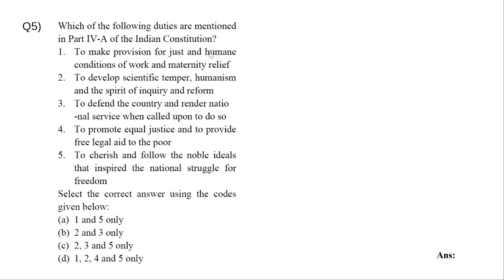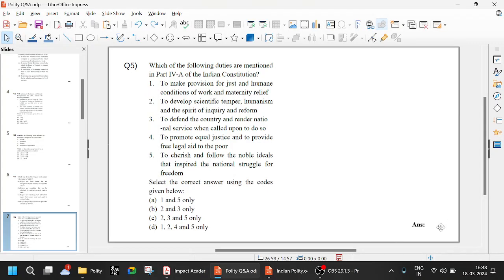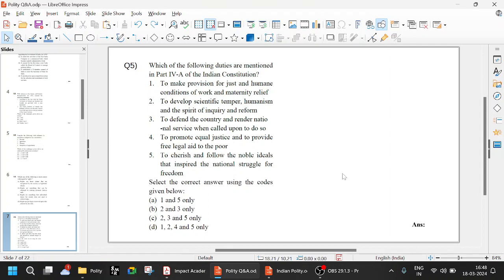Which of the following are mentioned in Part 4A? Statement 1 — 'to make provisions for just and humane conditions for work and maternity relief' — this is Article 42, part of DPSP, not a fundamental duty. Statement 2 — 'to develop scientific temper, spirit of inquiry, and reform' — yes, it is a fundamental duty, just as we saw. Statement 3 — 'to defend the country and render national service' — yes, it is a fundamental duty. Statement 4 — 'to promote equal justice and provide free legal aid' — this is Article 39A, part of DPSP. Statement 5 — 'to cherish and follow the noble ideas' — yes, this is a fundamental duty. So the answer is C: statements 2, 3, and 5 all belong to fundamental duties.